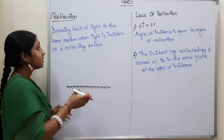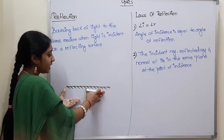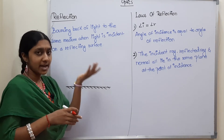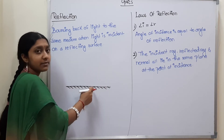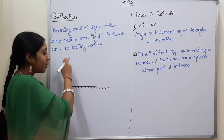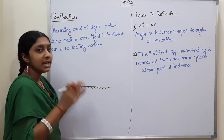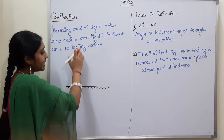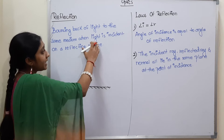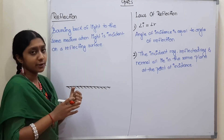Reflection of Light is the bouncing back of light to the same medium. When light is incident on a reflecting surface, it bounces back. This phenomenon is called Reflection. So bouncing back of light to the same medium when light hits a reflecting surface — that is Reflection.